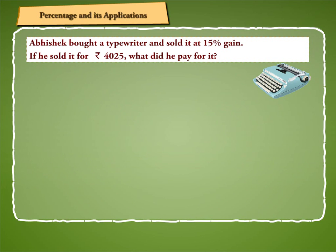Example: Abhishek bought a typewriter and sold it at 15% gain. If he sold it for Rs. 4025, what did he pay for it? Here we have SP of typewriter is equal to Rs. 4025.